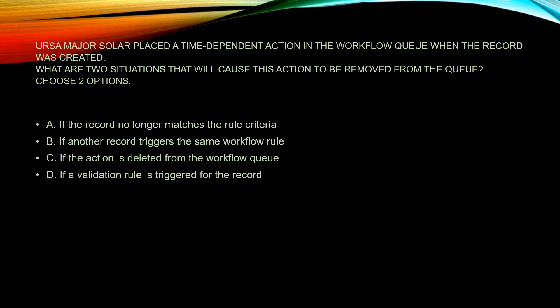B: If another record triggers the same workflow rule. C: If the action is deleted from the workflow queue. D: If a validation rule is triggered for the record.